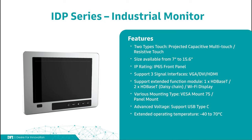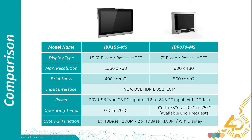You can choose one HDBaseT, two HDBaseT, or Wi-Fi display modules. You can see more details of IDP Series specs and the comparison of IDP-156MS and IDP-07DMS on this page. Both of them have the external functions of HDBaseT and Wi-Fi display.